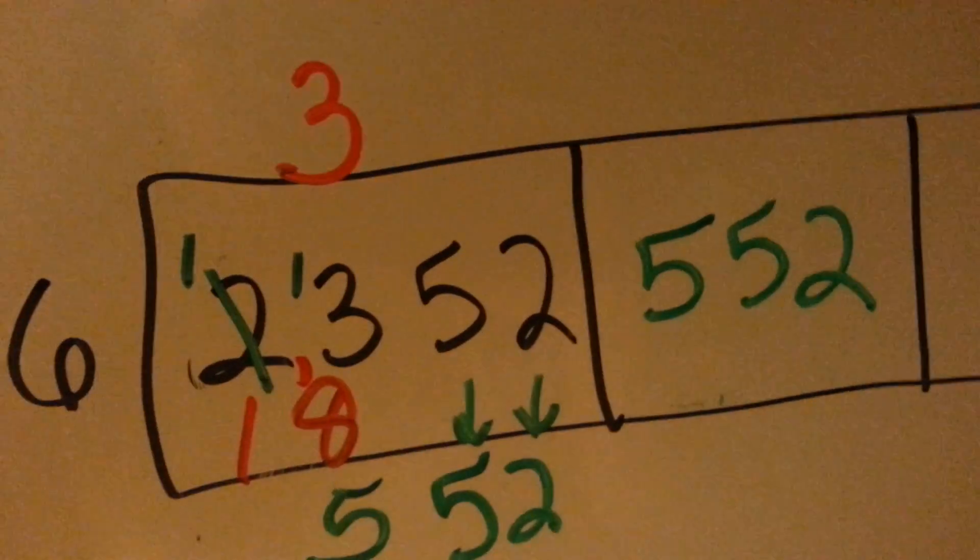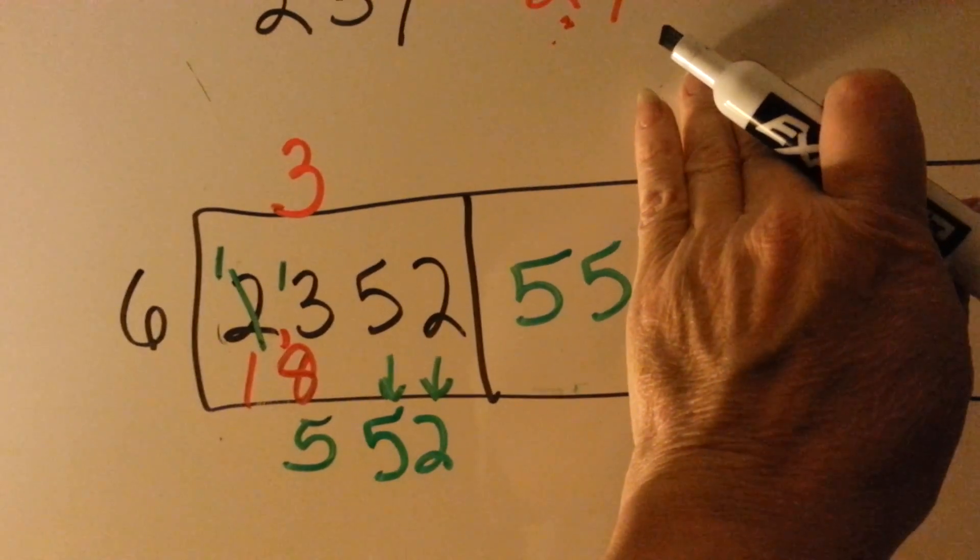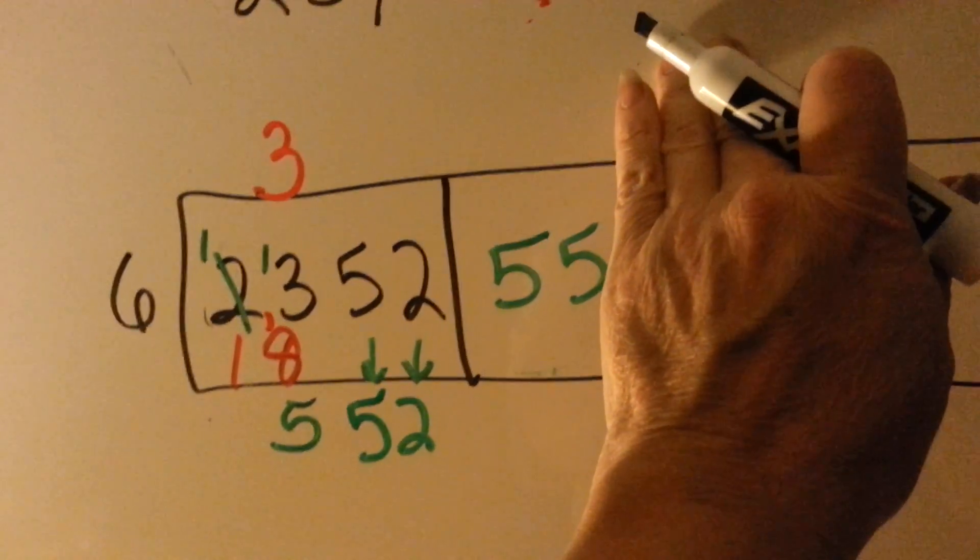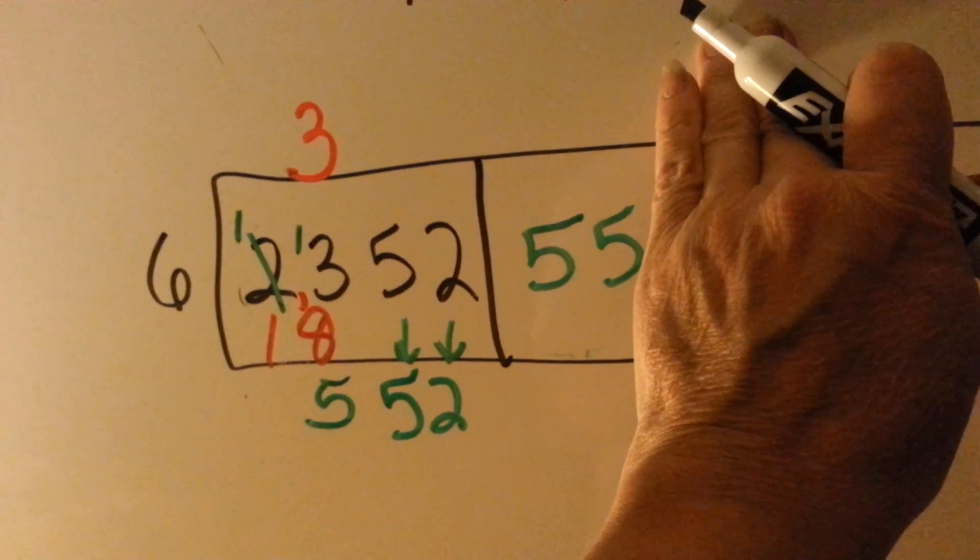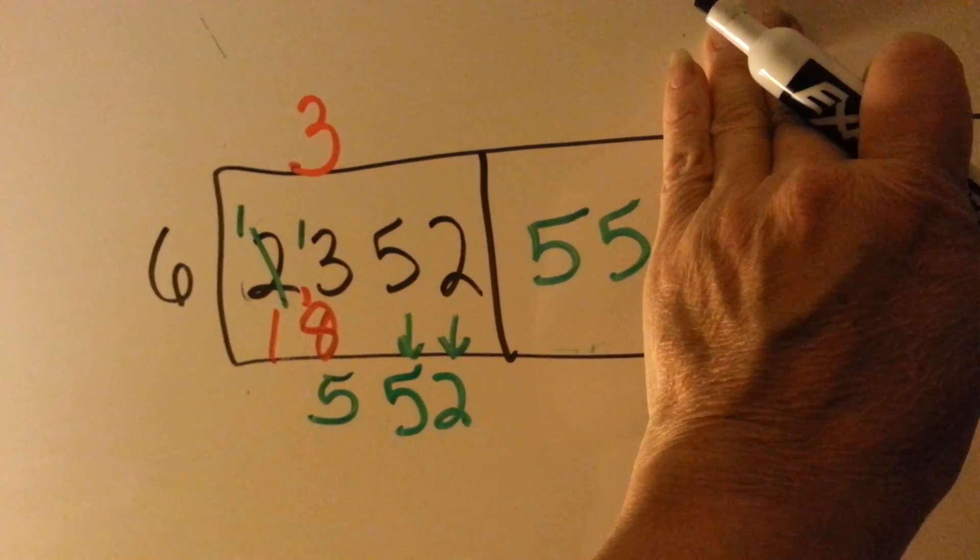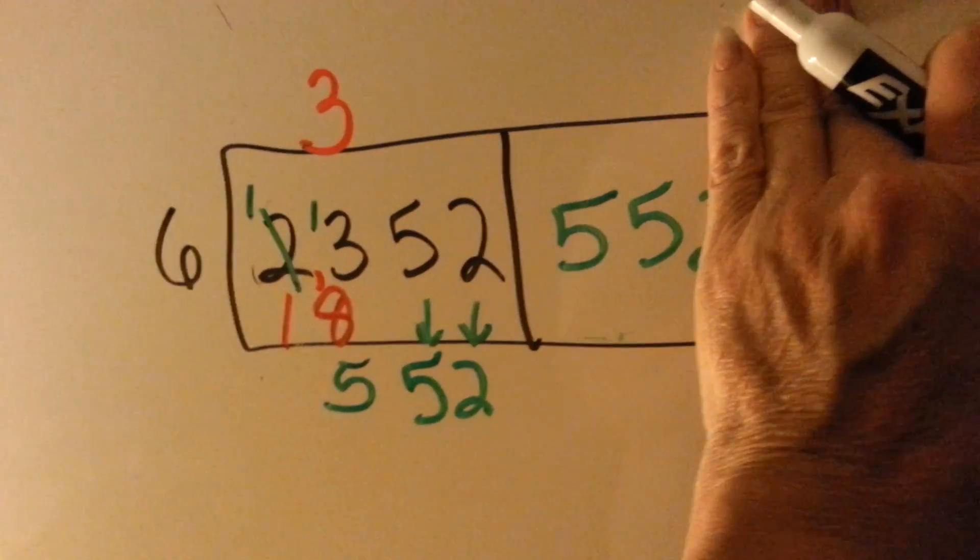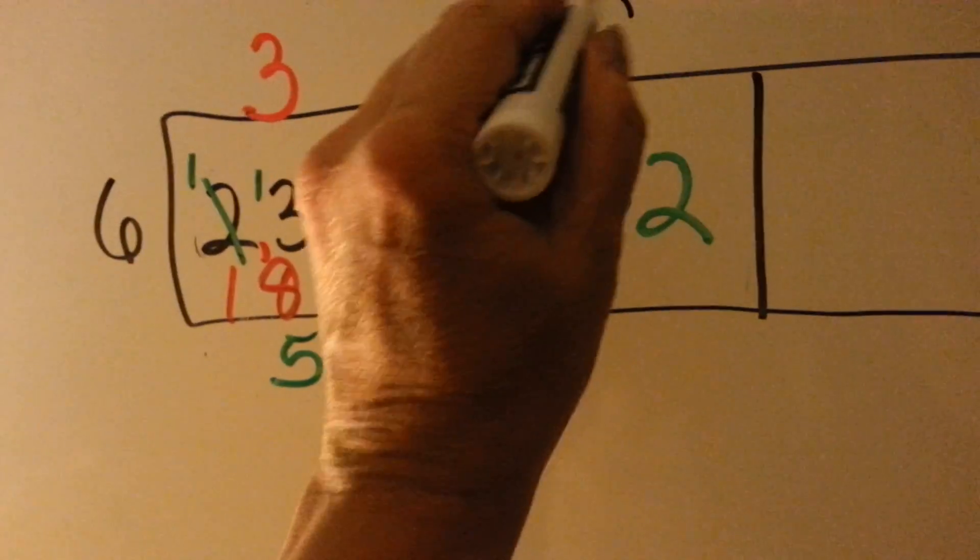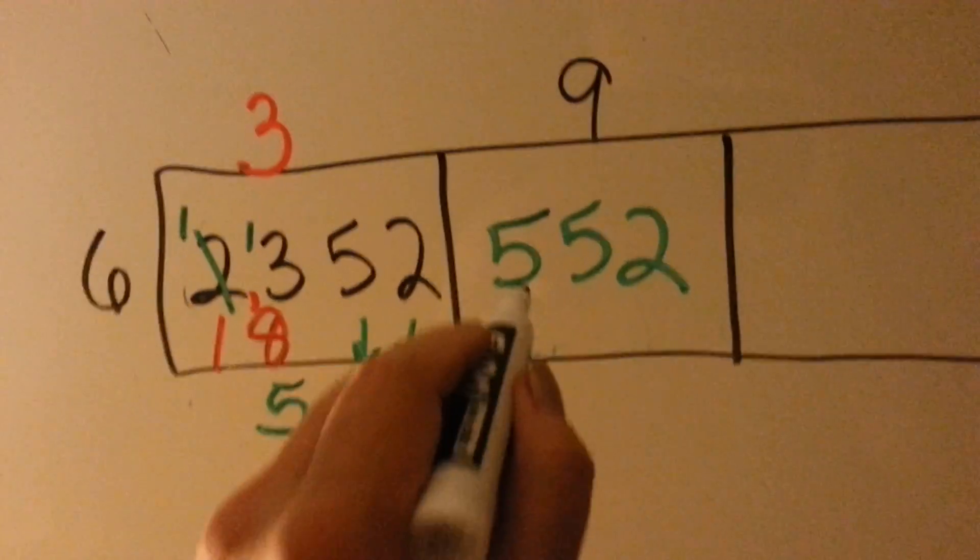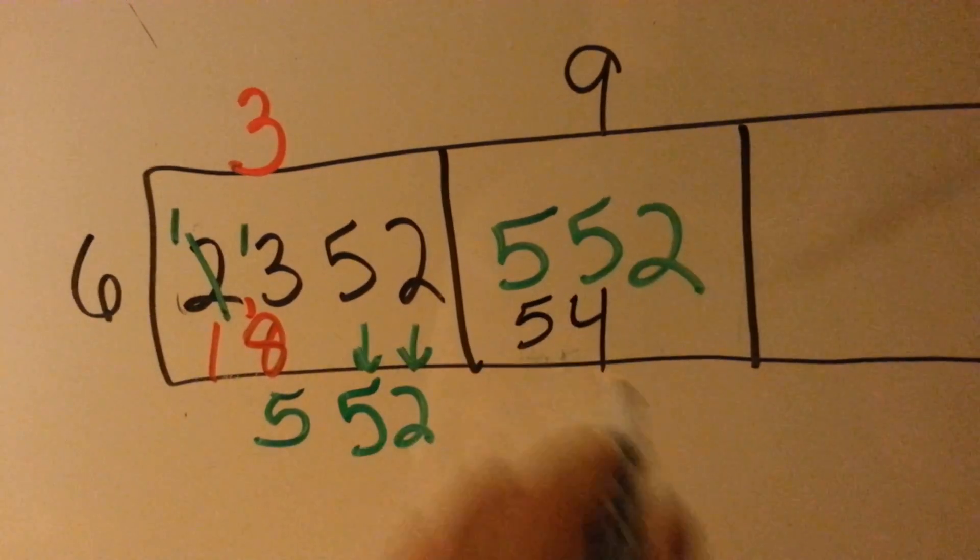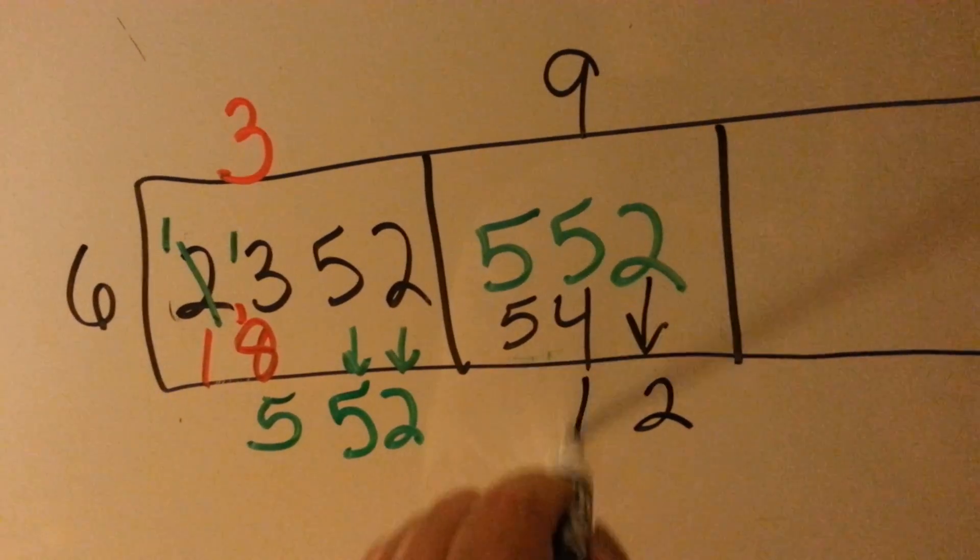Now we ask ourselves, how many times can 6 go into 5? None. But can 6 go into 55? Yeah, it can. 6 times 7 is 42. That's too little. 6 times 8 is 48. That's still too little. 6 times 9 is 54. That would fit very nicely. So let's put a 9 above the 55. 6 times 9 is 54. We do our subtraction. It's the 2's turn to come down. 5 take away 4 is 1.